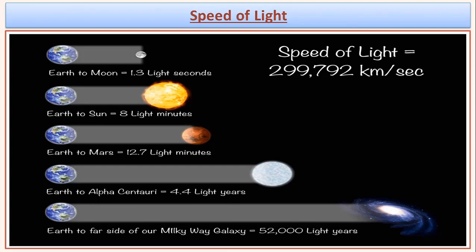As light goes through any transparent or translucent object, its speed decreases, which is related to its optical density. We will understand about the optical density of a material when we discuss about a term called refraction of light, which is related to the change in the speed of light for a given medium.